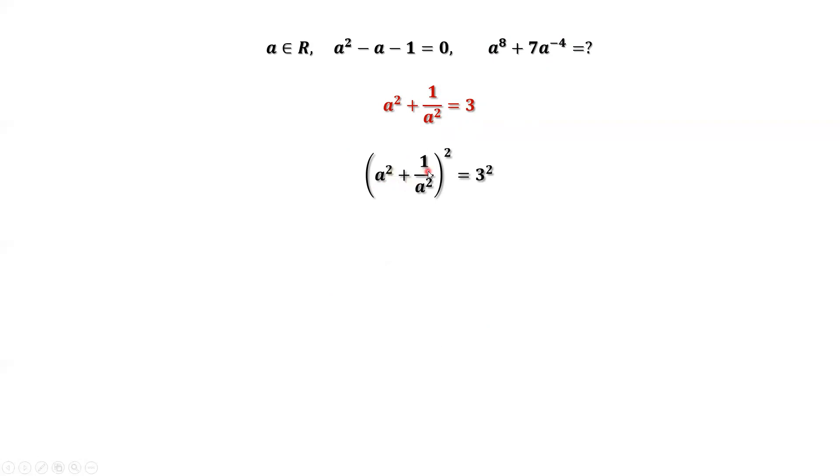Expand the left-hand side. We have a to the power of four plus two plus one over a to the power of four equals nine. Move two to the other side. We have a to the power of four plus one over a to the power of four equals seven.